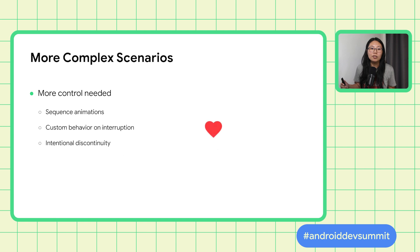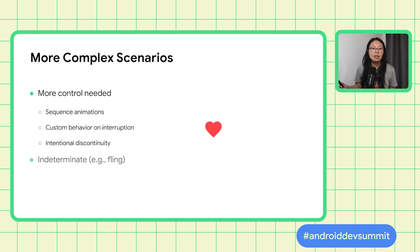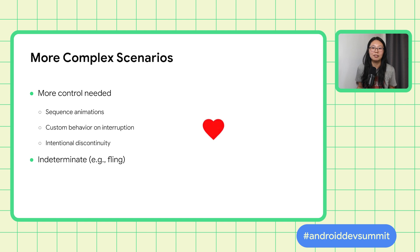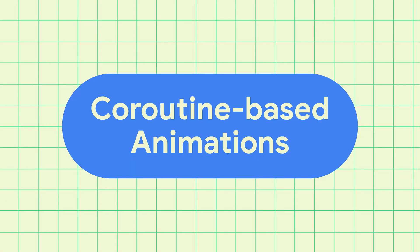For example, in the double-tap to like animation, a new double-tap will snap any ongoing animation to the beginning. You might also have an indeterminate animation where you don't know what the target is — fling is such an example. The target of a fling is only derived from the starting conditions and its decay function. To handle these intricate use cases, we're going to use a powerful Kotlin feature: coroutines.